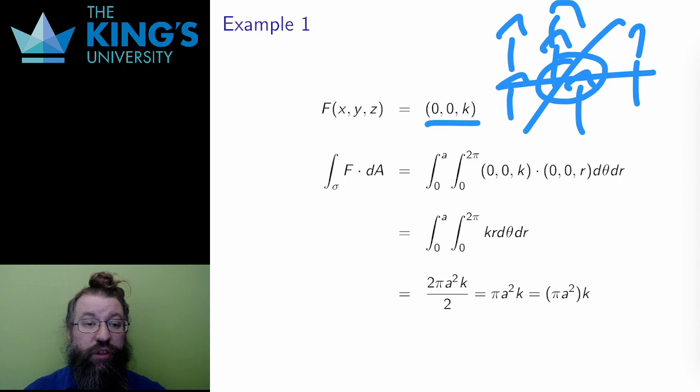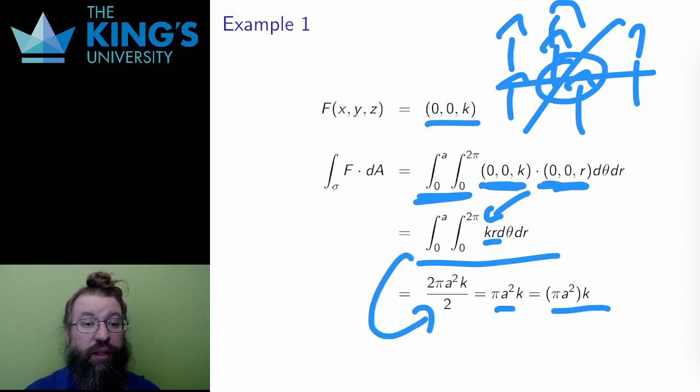The definition of the flux integral is the integral over the parameter domain, r from 0 to a, theta from 0 to 2π, of the field evaluated on the surface dot product with the normal of the surface. So here the field is just (0,0,k), so I dot that with (0,0,r), which produces k times r. Then I have a separable double integral. Not showing the integral details here, the result is πa²k.